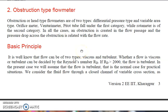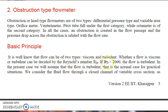Hello students. As you know, we have started flow measurement, and the very first type is the obstruction type flow meter. There are two types: differential pressure type and variable area type. The basic principle is that whether a flow is viscous or turbulent can be decided by Reynolds number. If Reynolds number is greater than 2000, the flow is turbulent, and for turbulent and incompressible flow we have to follow a specific formula.